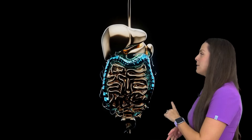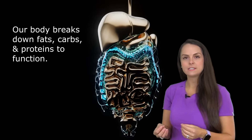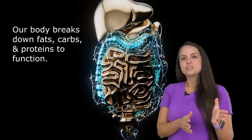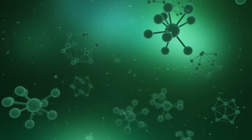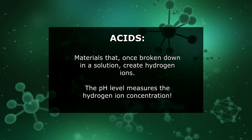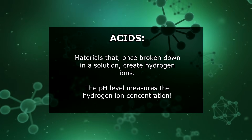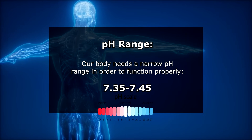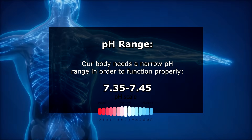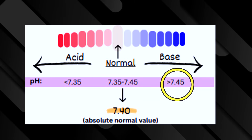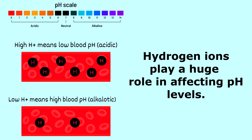To understand metabolic acidosis better, let's talk about acids. Your body metabolizes substances to function — this process breaks down fats, carbs, and proteins to give us energy. A byproduct of this process is the creation of acids. Acids are materials that, once broken down in solution, create hydrogen ions. pH measures hydrogen ion concentration, and our body needs a narrow pH range of 7.35 to 7.45 to function. Anything less than 7.35 is too acidic and anything greater than 7.45 is too alkaline. Too many hydrogen ions lowers blood pH below 7.35; too few raises it above 7.45.